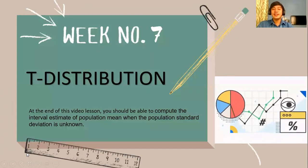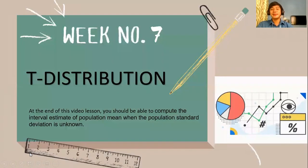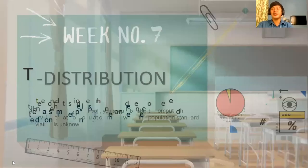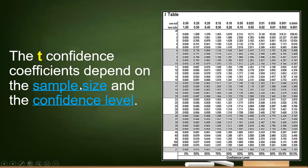At the end of this video lesson, we should be able to compute the interval estimate of the population mean when the population standard deviation is unknown — we do not have a sigma. The T confidence coefficient depends on the sample size and confidence level. So instead of using 1.96, 1.65, and 2.58 respectively as confidence coefficients, we will use the T table in determining the confidence coefficient.